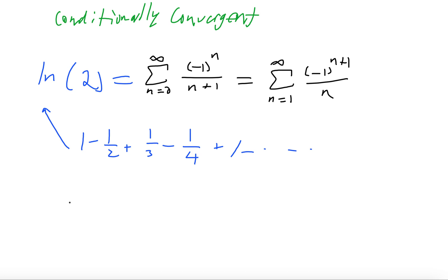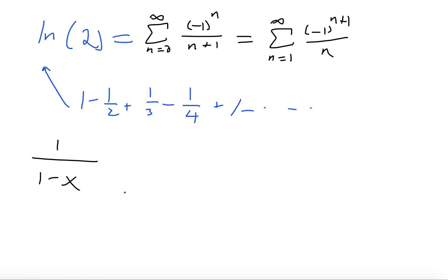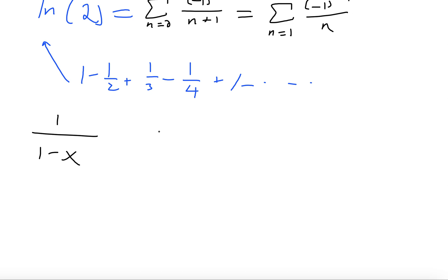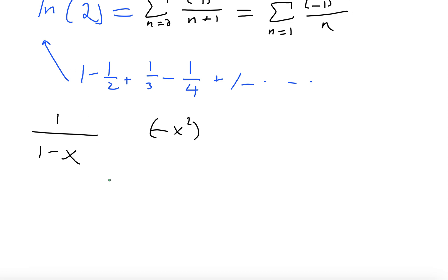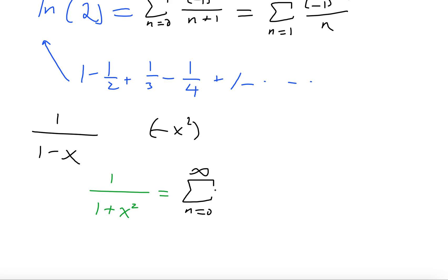Let's go back to the geometric series and this time plug in minus x squared instead of x. We get 1 over 1 minus (minus x²), which is 1 over 1 plus x², equal to the sum from n equals 0 to infinity of (minus x²)^n, which is (minus 1)^n times x^(2n), using exponent rules.